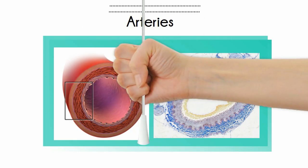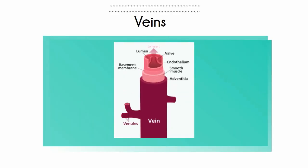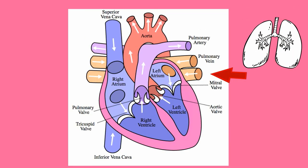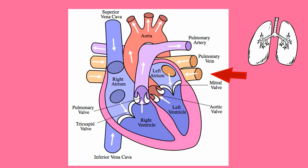Veins carry blood towards the heart. Veins are oxygen poor, except for the pulmonary vein. Take a look at the heart again and the flow of blood — the pulmonary vein carries blood from the lungs to the heart, and this blood has lots of oxygen.